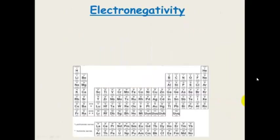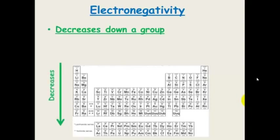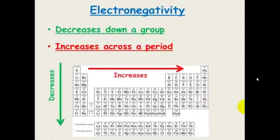The trends in electronegativity: it decreases as you go down a group and increases as you go across a period. Overall, it increases diagonally, with fluorine and the surrounding elements having some of the highest electronegativities on the periodic table.